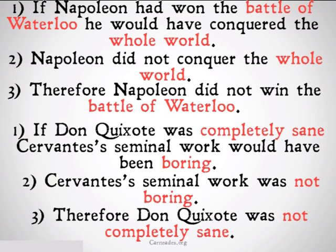As you can see, the idea of modus tollens is to deny the consequent — deny the second part of a statement — which will allow us to deny the first part, the antecedent of an implication. It's important to note that if you deny the first part, the antecedent of an implication, you're not allowed to deny the consequent; or if you affirm the consequent, the second part of an implication, you're not allowed to affirm the first part.